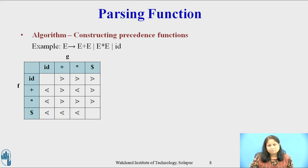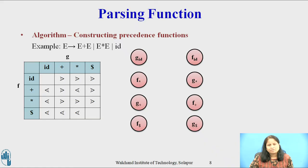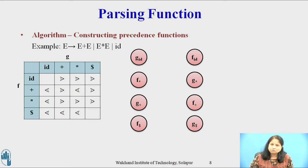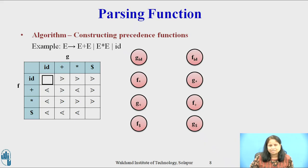Consider the example grammar: E derives E plus E, E into E, or id, along with the operator precedence relation table. Consider the nodes for the functions f and g of every symbol: id, plus, multiplication, and dollar. Looking at the first row of the table: there is no relation between f(id) and g(id), so no arc is drawn. The relation between f(id) and g(plus) is takes-precedence-over, so there will be an arc from f(id) to g(plus).